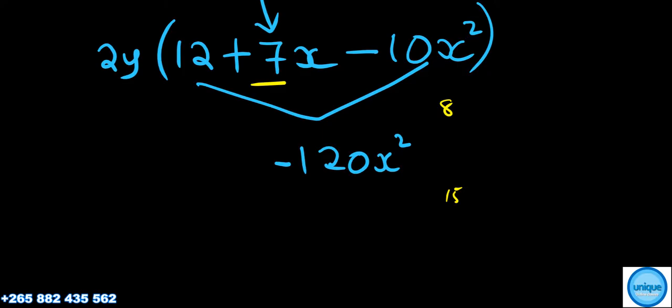Therefore the factors are 8 and 15. Whenever you multiply and the answer is negative, it would be a positive number and a negative number, because only a negative number and a positive number can be multiplied to give us a negative.